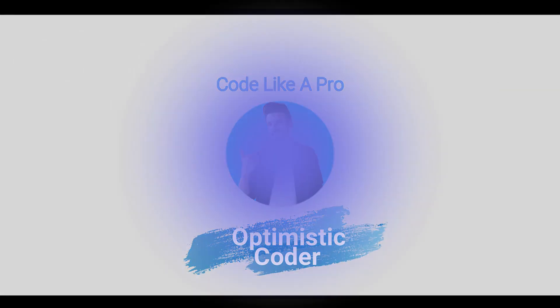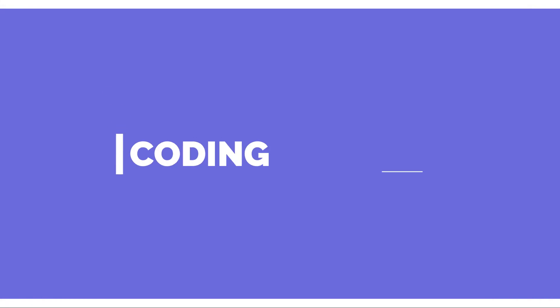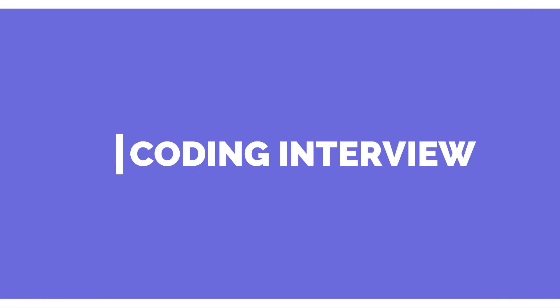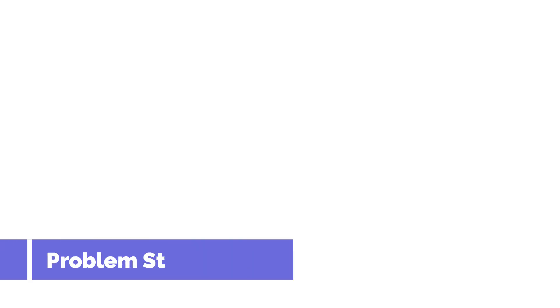Hello everyone, myself Pawan and you are watching Optimistic Coder. I'm back with another video on coding interview questions. Let's have a look at today's problem statement: you are given two strings, and you need to write a method to decide if one is a permutation of the other.